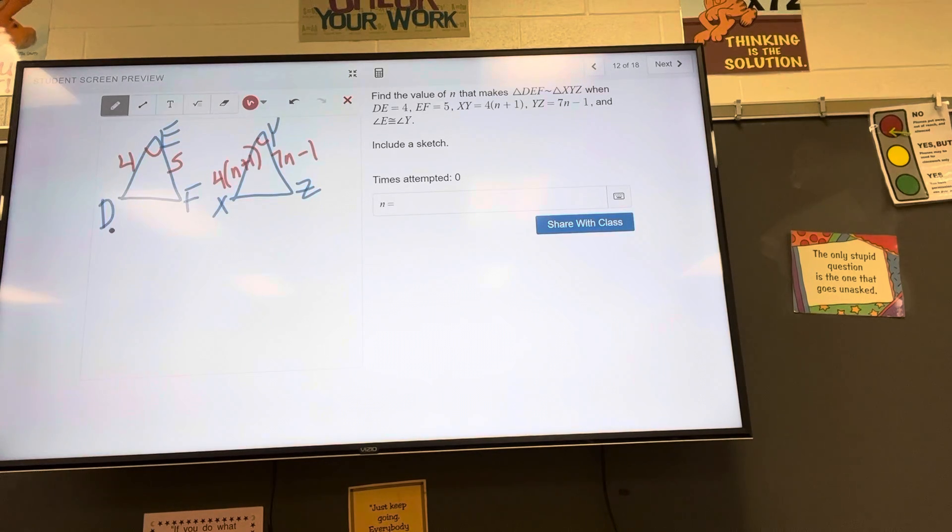Four is to four times the quantity in parentheses n plus 1, equal to 5 over 7n minus 1. So now we're going to have to cross multiply. So 4 times 7n minus 1 should equal 5 times 4 is 20, and then parentheses n plus 1. How are we doing?